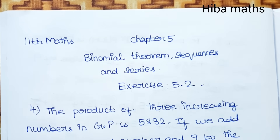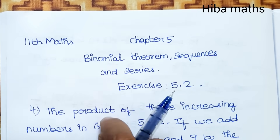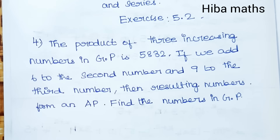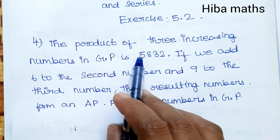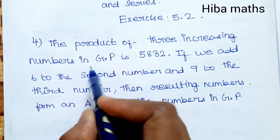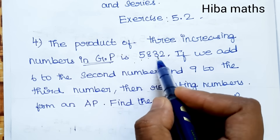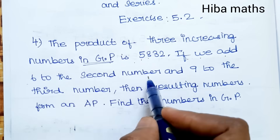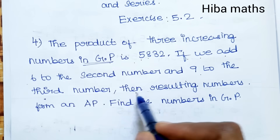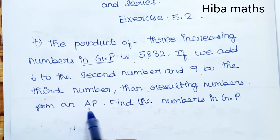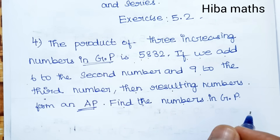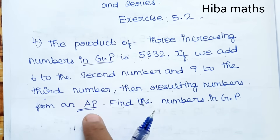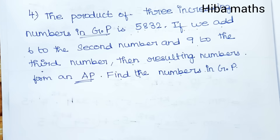Hello students, welcome to Hiba Max XI Standard, Chapter 5 Binomial Theorem Sequence and Series, question 5.2 4th question. The product of 3 increasing numbers in GP is 5832. If we add 6 to the 2nd number and 9 to the 3rd number, the resulting numbers form an AP. Find the numbers in GP. First condition is GP, second condition is AP, and the final answer is GP.